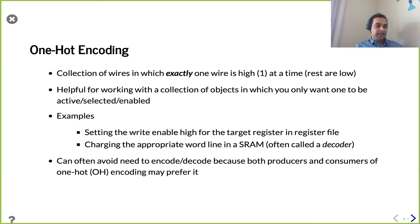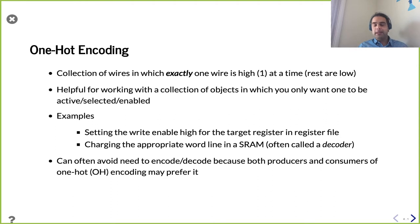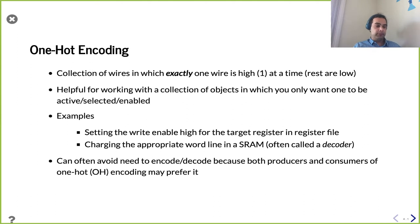This is very helpful because as you're building up your modules with a lot of internal components, sometimes you don't want a fully encoded number in the usual binary sense. What you actually want is a signal per component. What you want is to activate, select, or choose a single component — say, you're the one that gets to do stuff, everyone else shouldn't be doing anything.